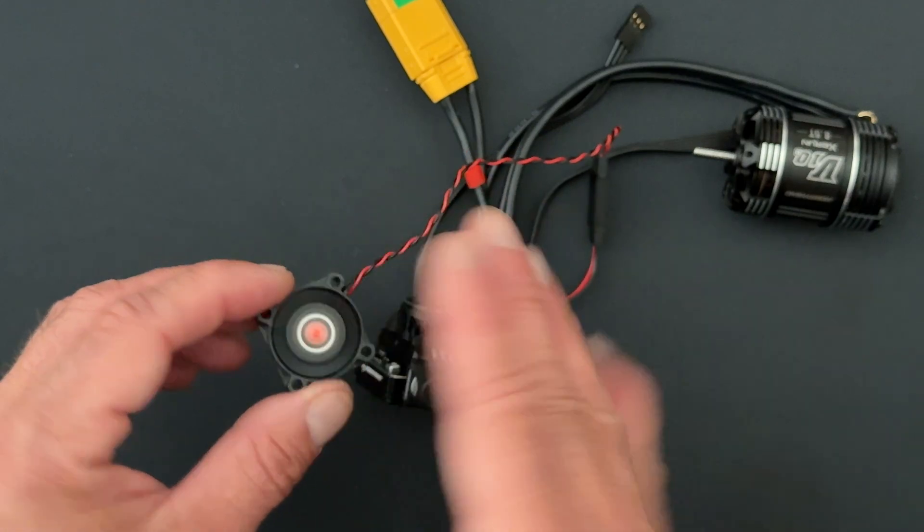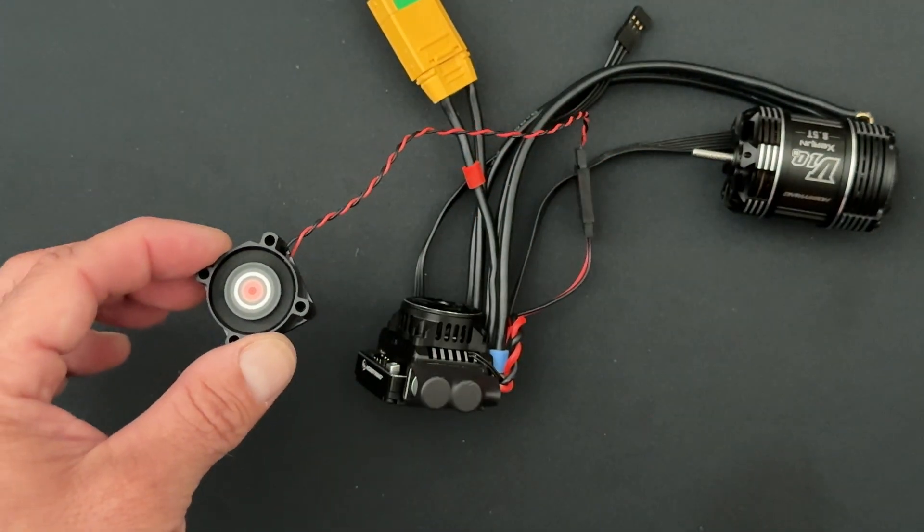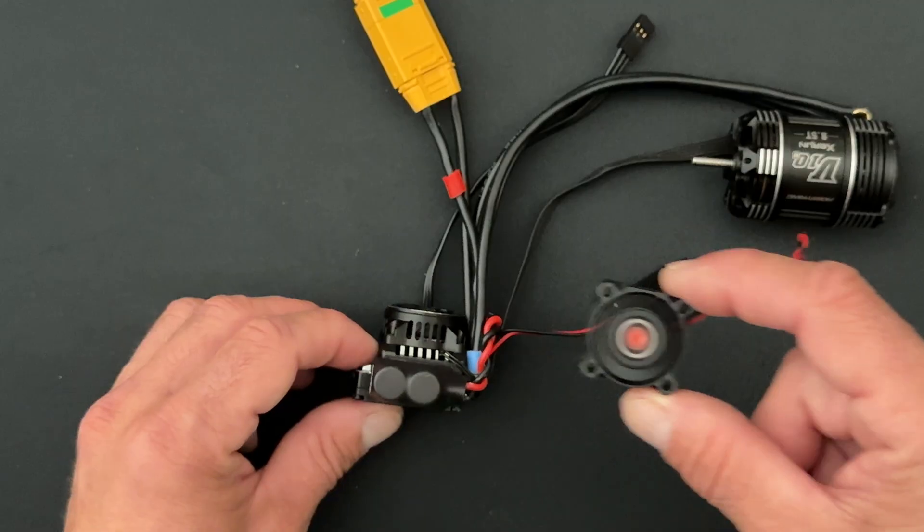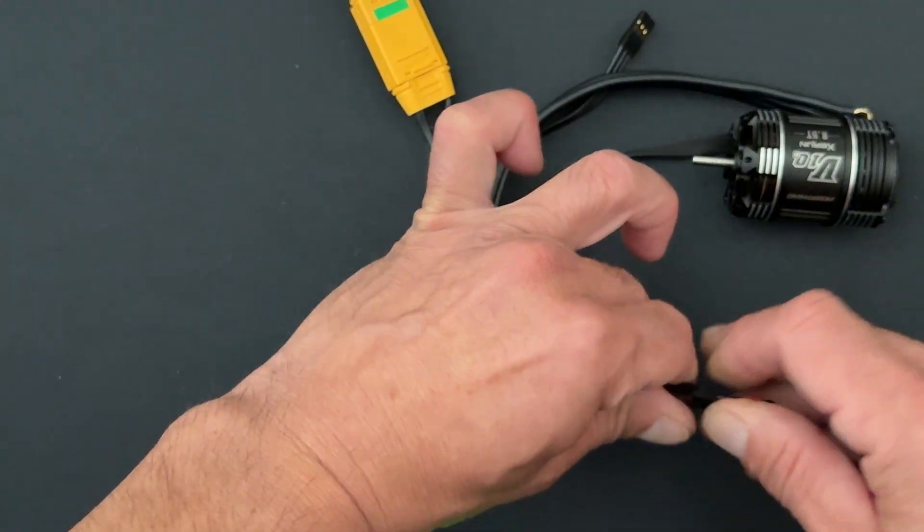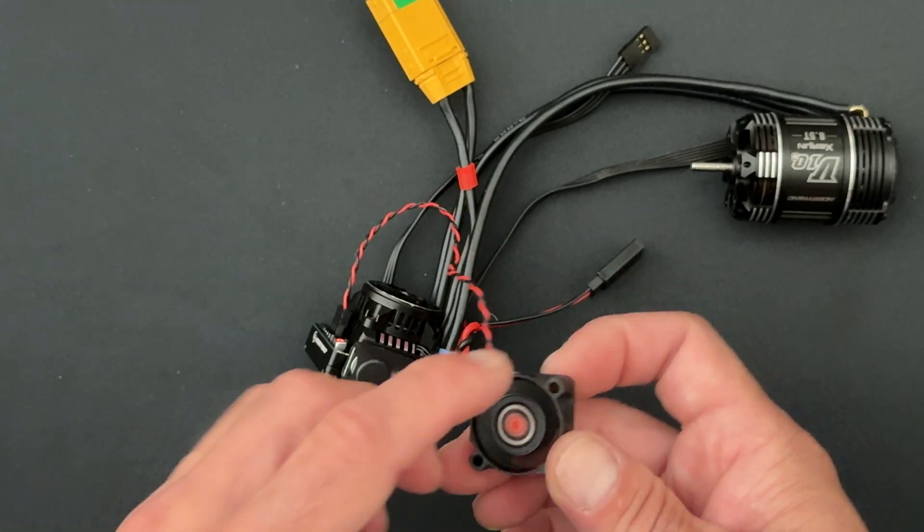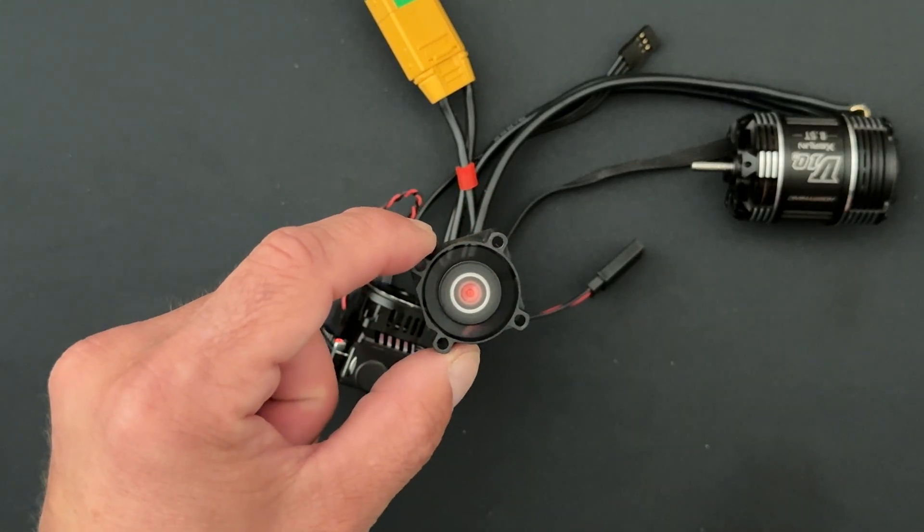The fan is pretty much running faster than it normally does off the regular six volts. And I can show you that here. Here's the fan off the battery voltage. And this is the fan off the BEC voltage, so six volts.